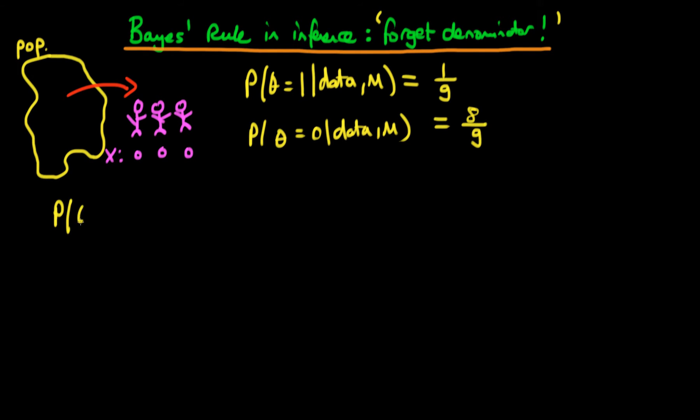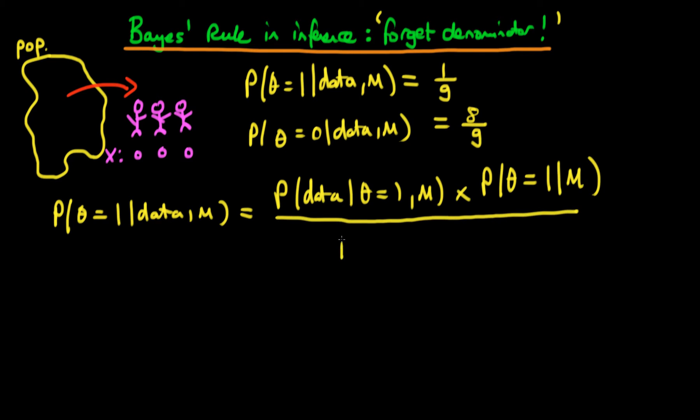The first one is the probability that theta is equal to 1 given our data and also given our model choice. We know that this is equal to the likelihood, which is the probability of our data given that theta is equal to 1 and given our model choice, times our prior probability, which is the probability which we assigned to theta being equal to 1 given our choice of model, divided through by the probability of our data given our choice of model. Note that this denominator here doesn't depend on theta.